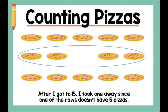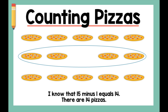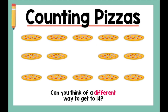After I got to fifteen, I took one away since one of the rows doesn't have five pizzas. I know that fifteen minus one equals fourteen. There are fourteen pizzas. Can you think of a different way to get to fourteen?